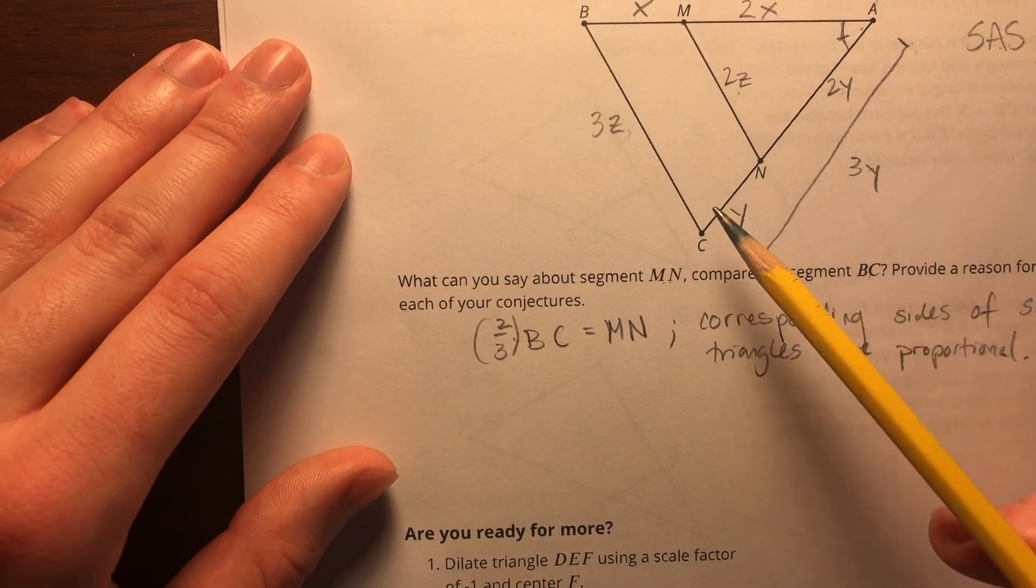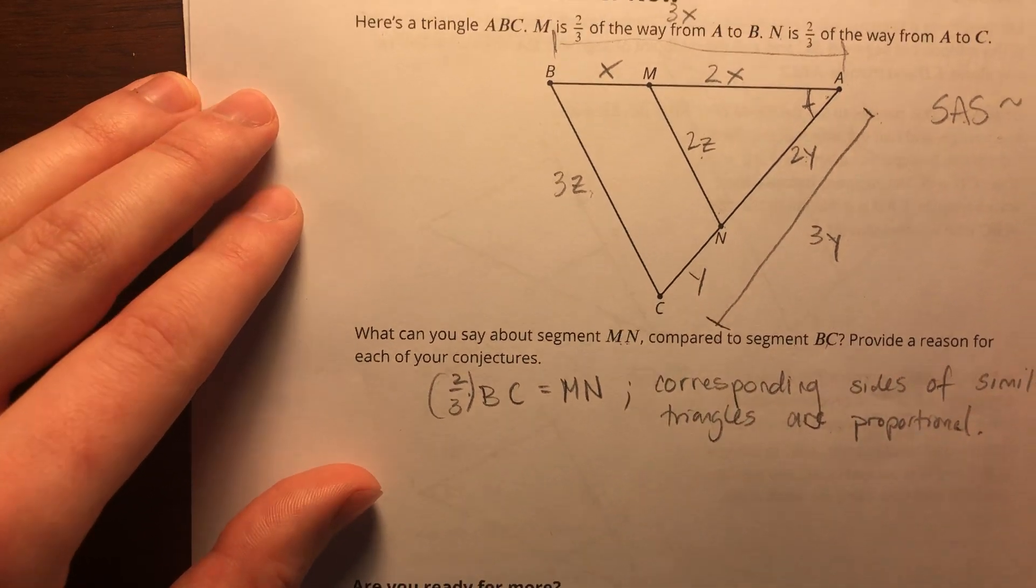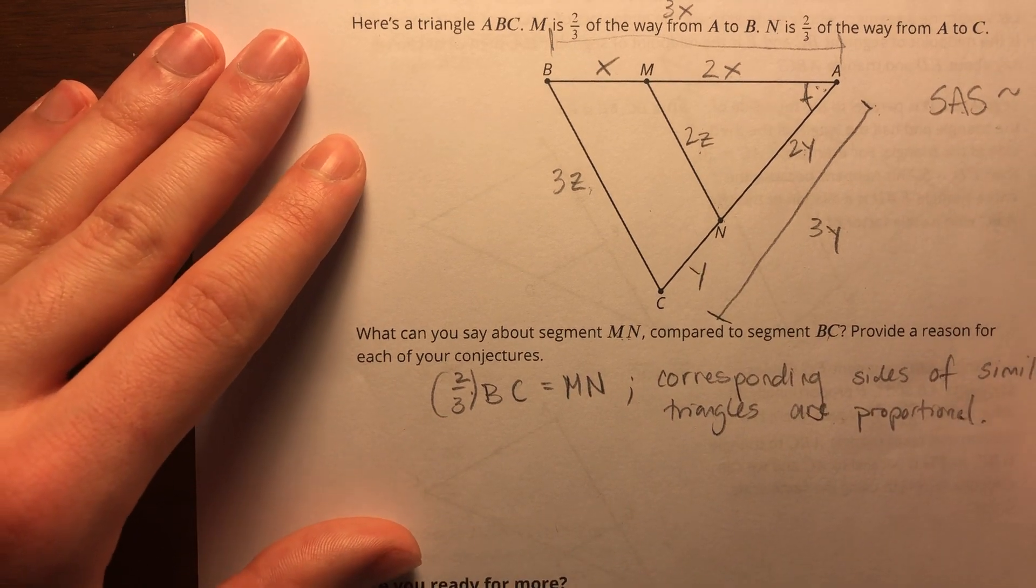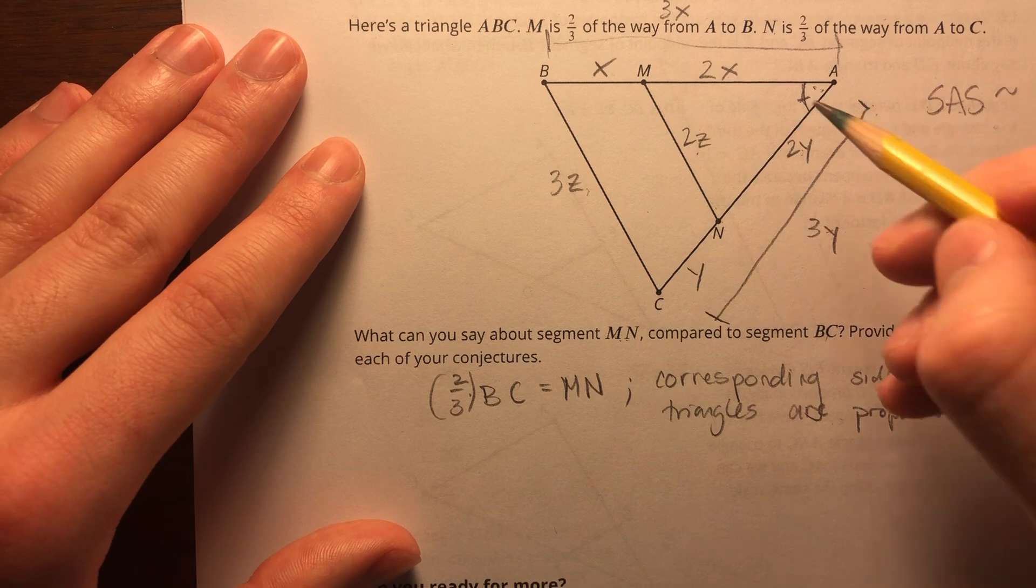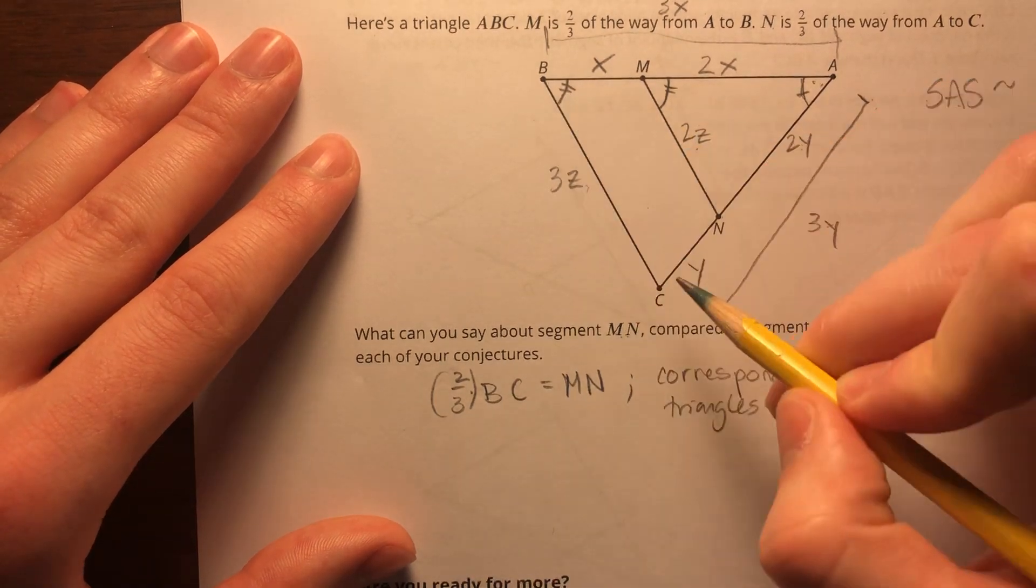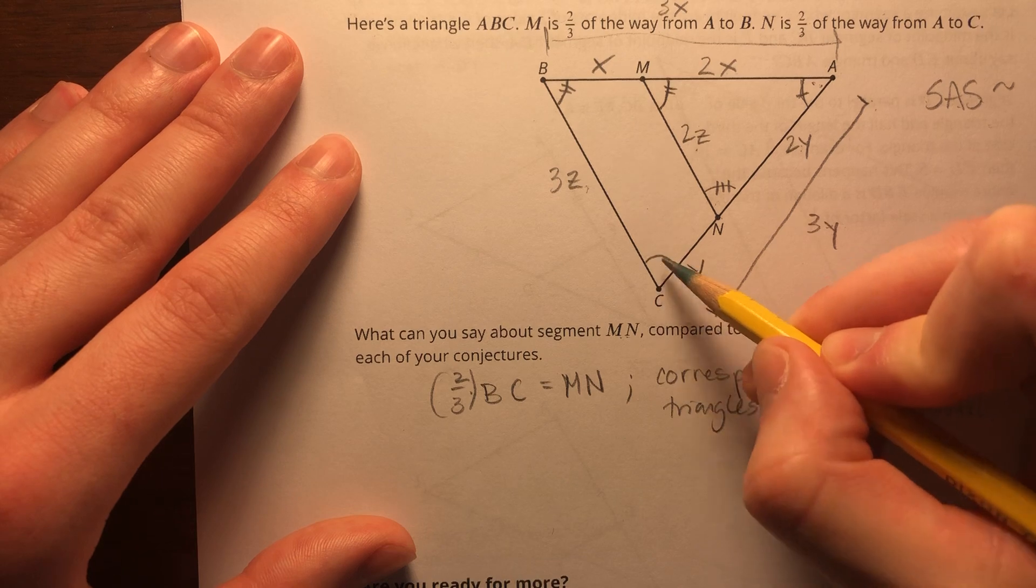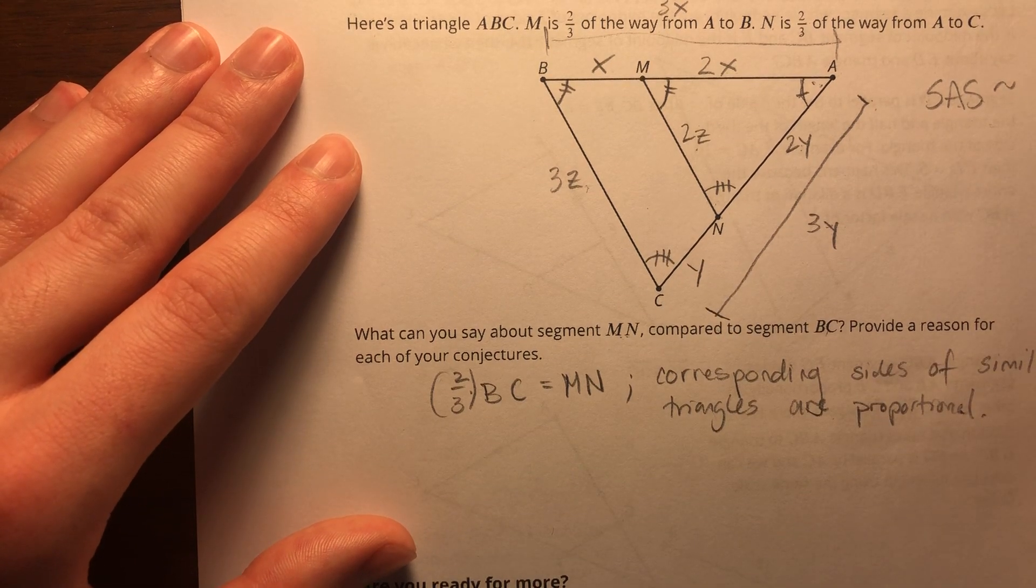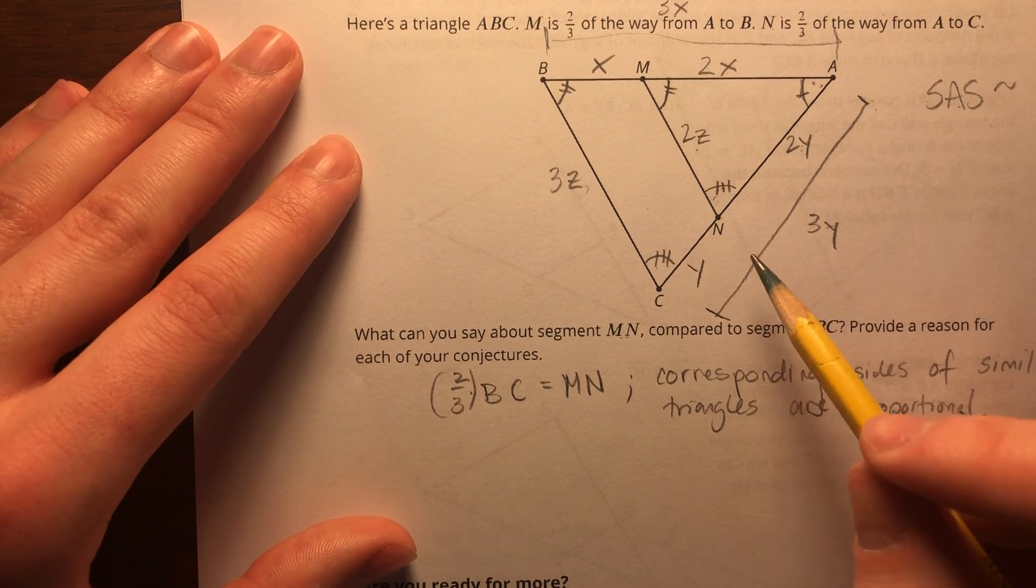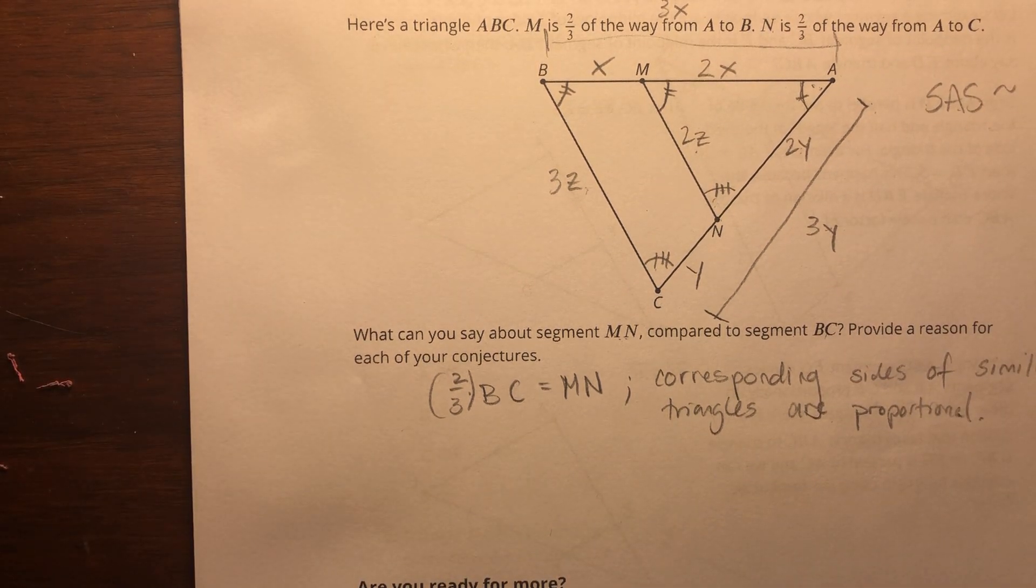There's even more that we can say about BC and MN. Just looking at these two lines, they appear to be parallel. Well, if I know that these two triangles are similar, besides knowing that all the sides are proportional, I also know that my corresponding angles are congruent. So I know that M here is going to be congruent to this angle down here, ABC. And I also know that this angle here is going to be corresponding to this angle C. So if we have angles like this, these are known as corresponding angles, if you remember from our unit on parallel lines.